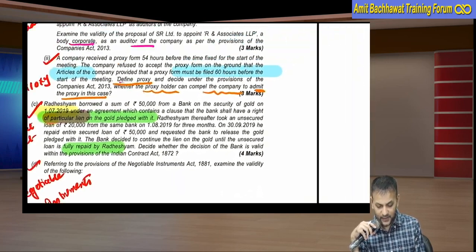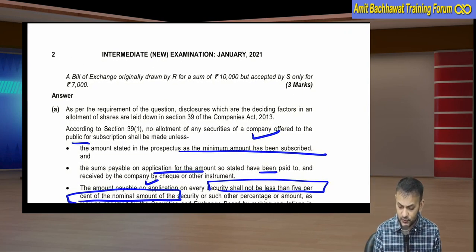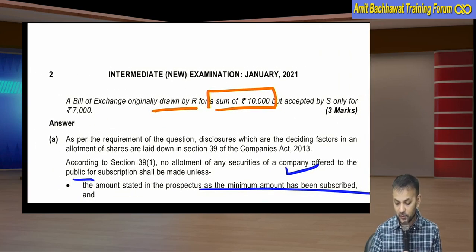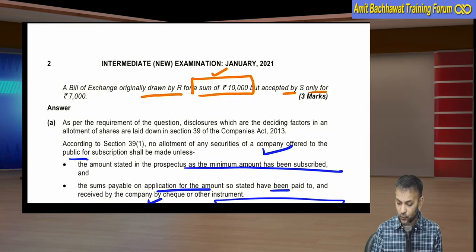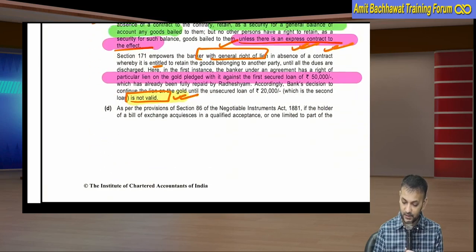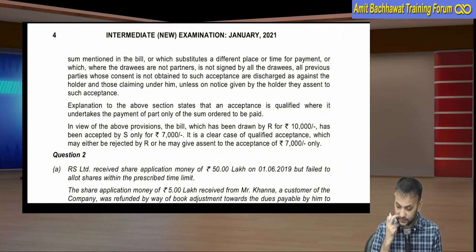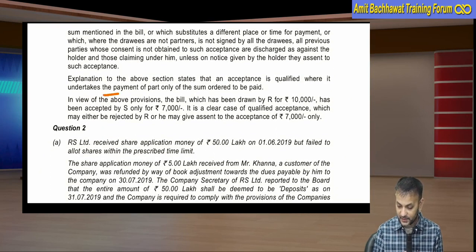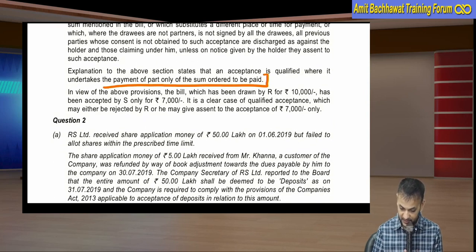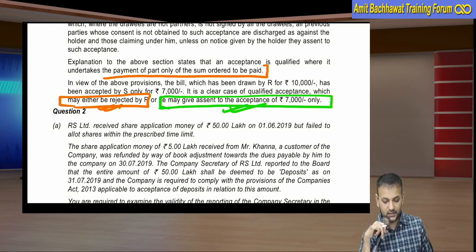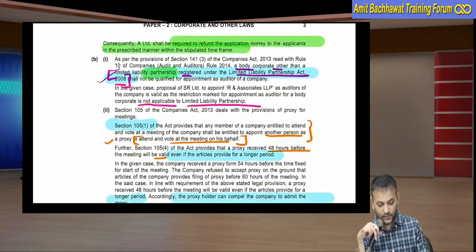Referring to the provisions of the NI Act, examine the validity of the following: A bill of exchange originally drawn by R for a sum of 10,000 but accepted by S only for 7,000. This is a case of qualified acceptance, where the acceptance undertakes payment of only part of the sum ordered to be paid. R may either reject this qualified acceptance, or he may give assent to the acceptance of 7,000 only. These are very typical questions - if you have not practiced earlier, you will be in deep trouble.